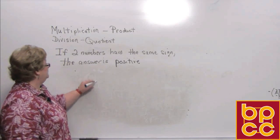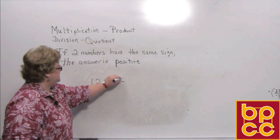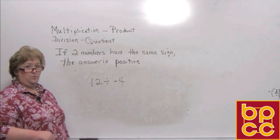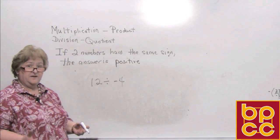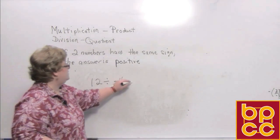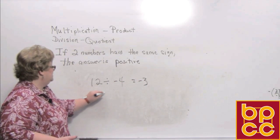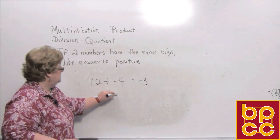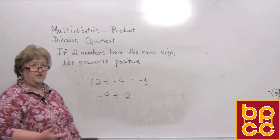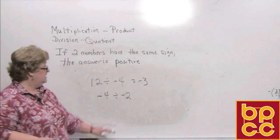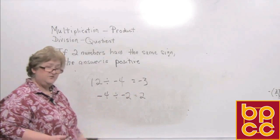Let's say we have 12 divided by a negative 4. We have one positive and one negative — one negative has no match, so the answer is going to be negative. 12 divided by 4 is 3, but it's going to be a negative 3. If I have a negative 4 divided by a negative 2, the signs are the same, so the answer is going to be positive — a negative 4 divided by a negative 2 is a positive 2.